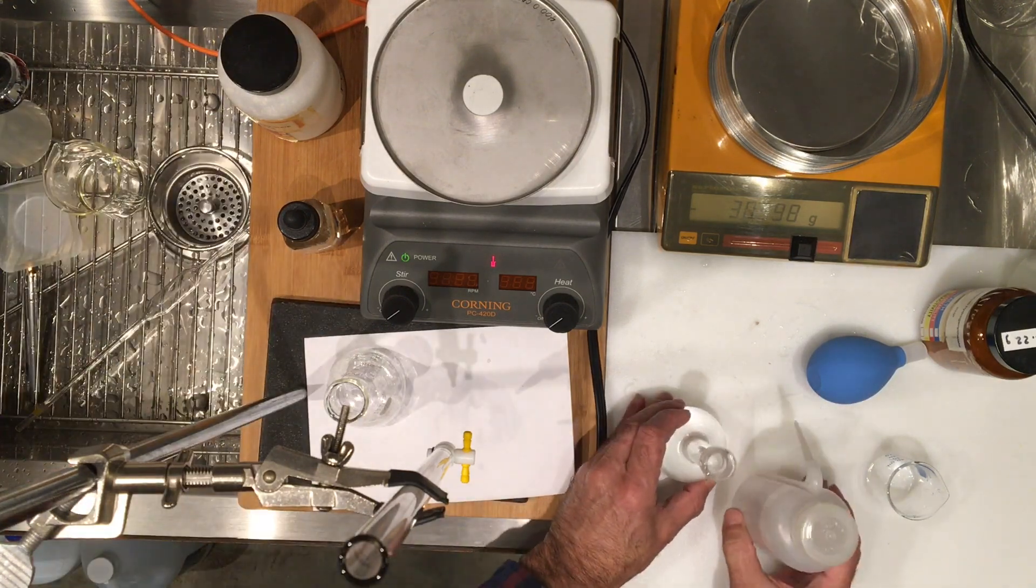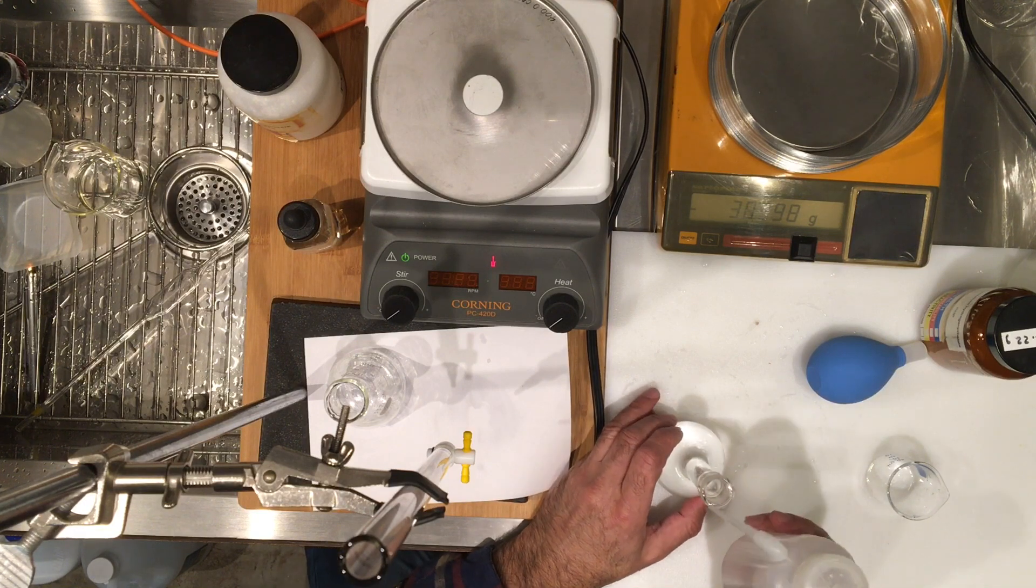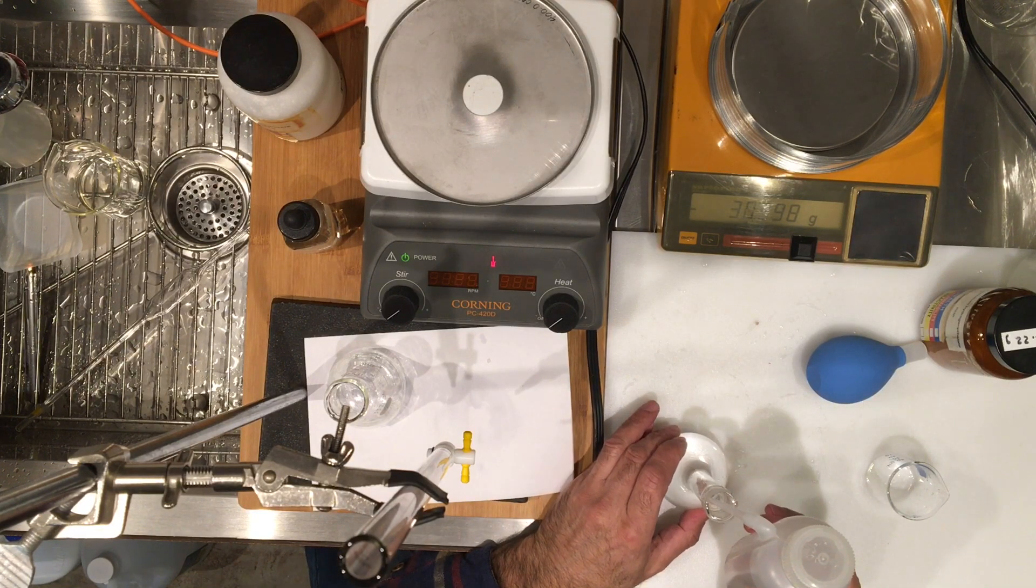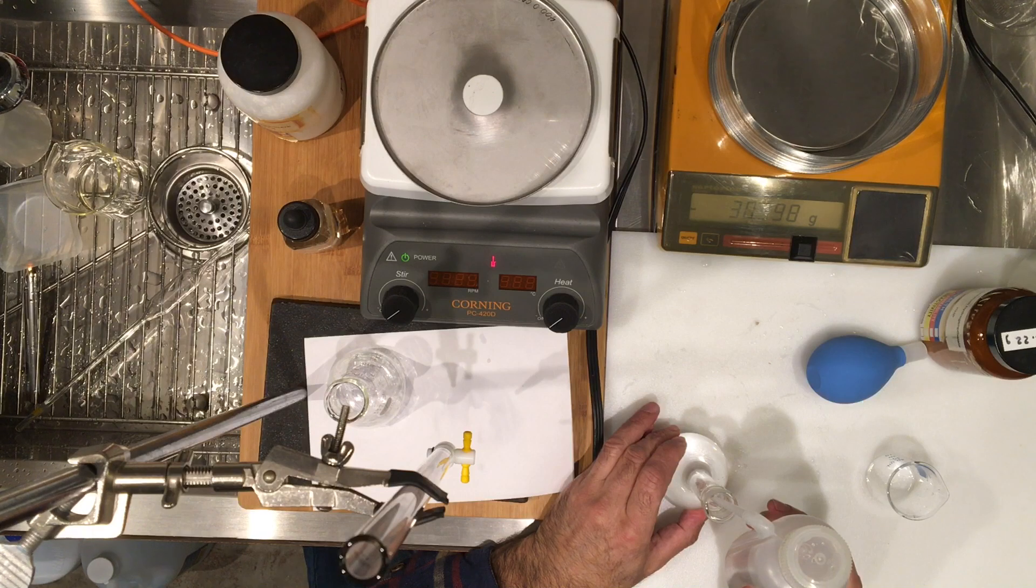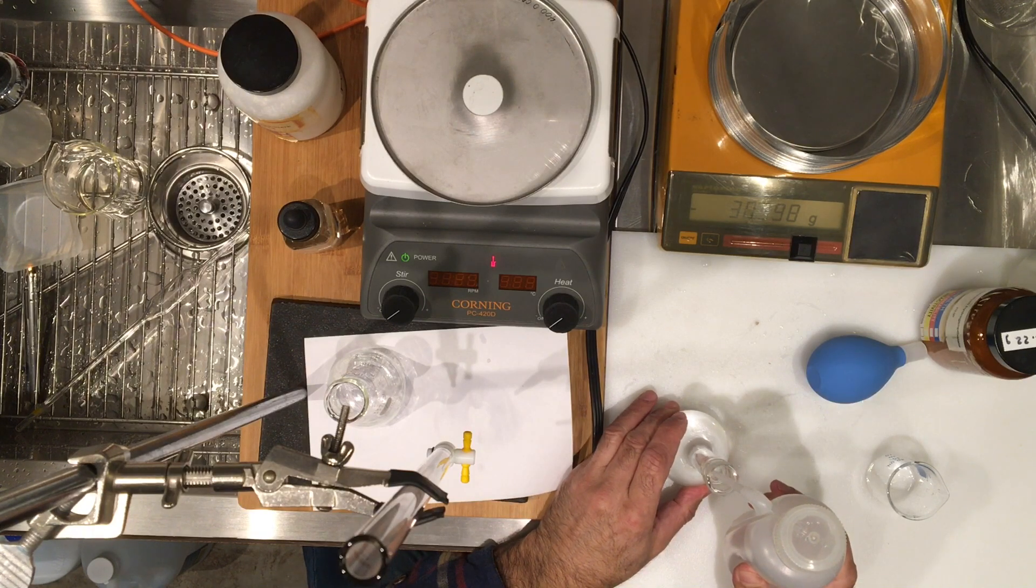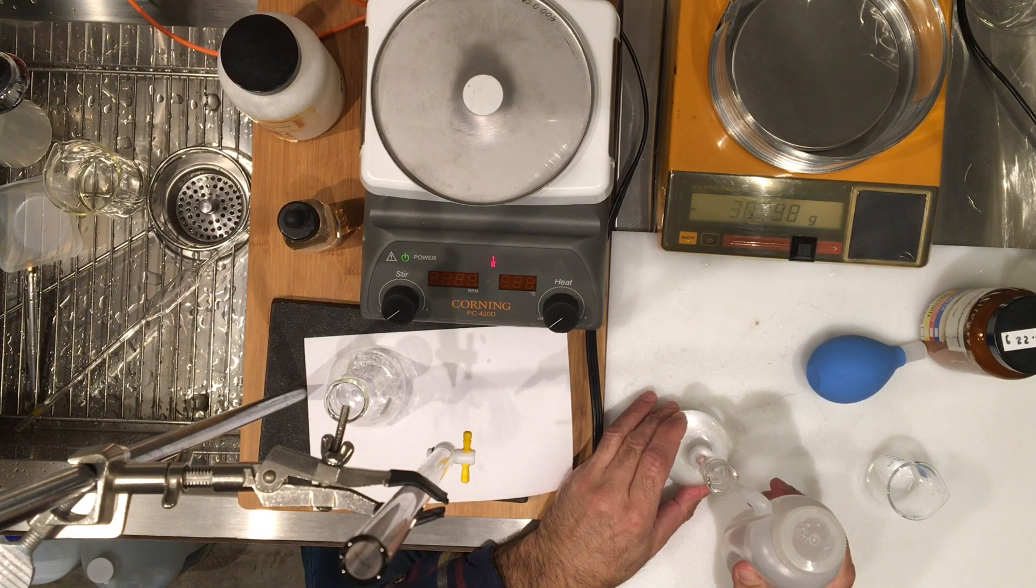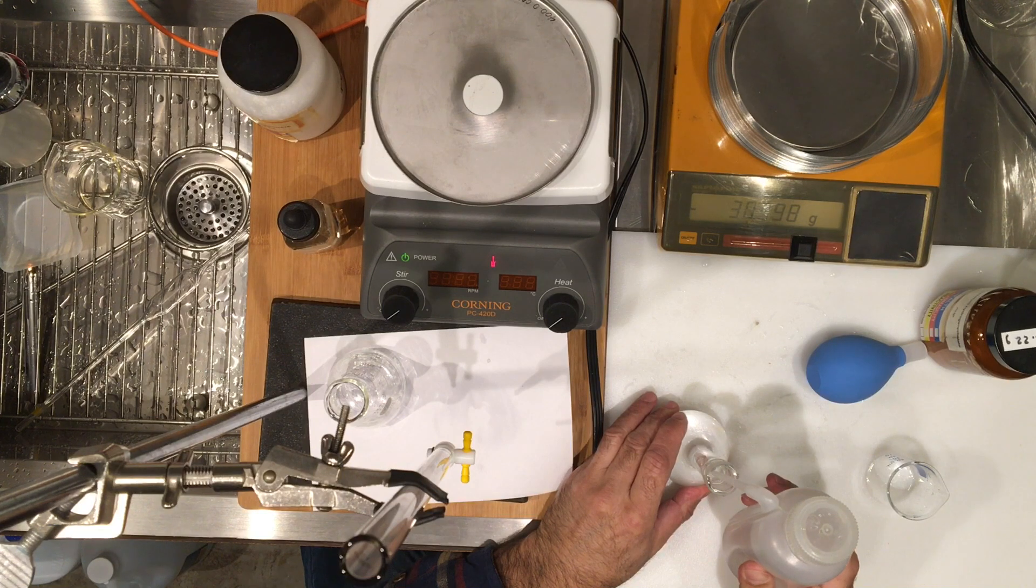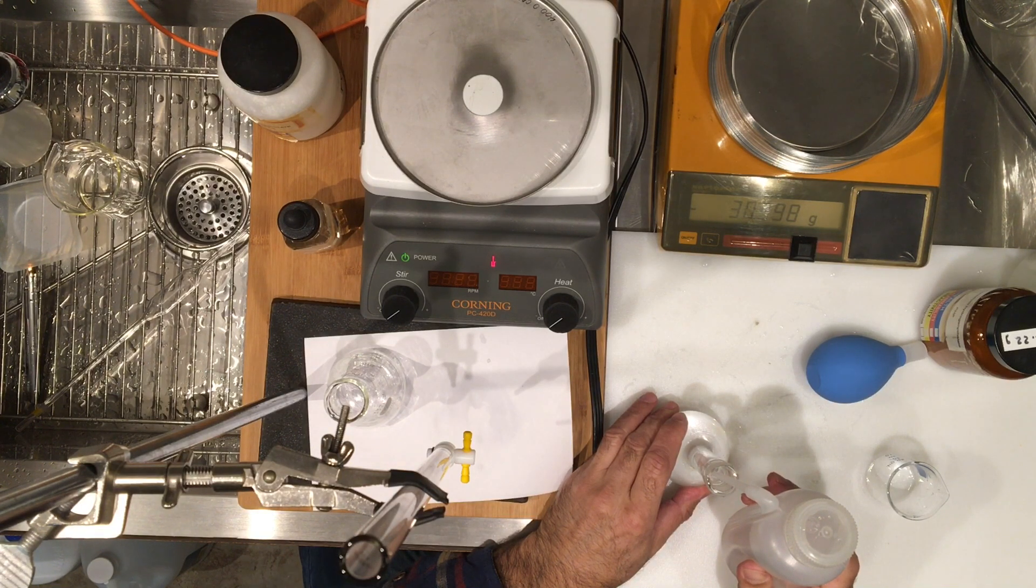So now I'm going to get my eye level with the marking of the flask, and very gently, gradually add my DI water to where the meniscus is in line. The bottom of the meniscus just touches the line.